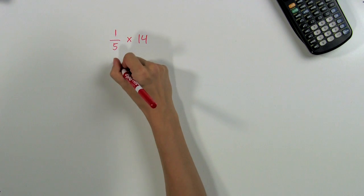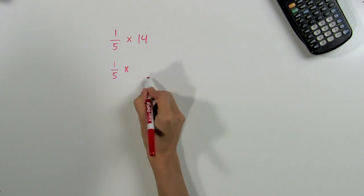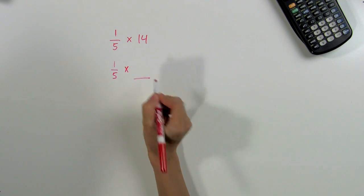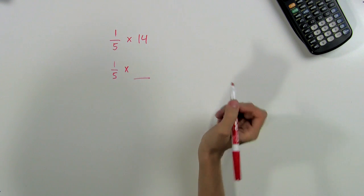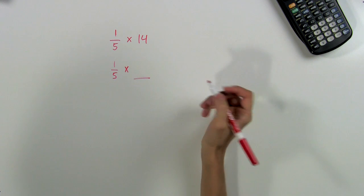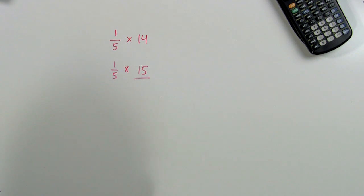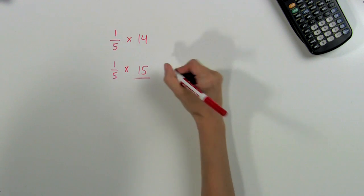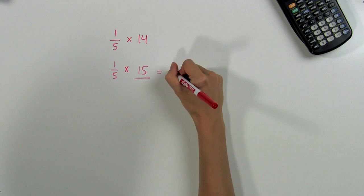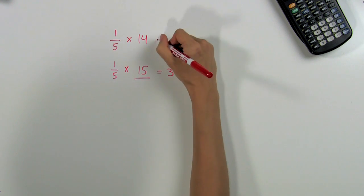Since our fraction is 1/5, we want a number here that is close to 14 but easily divisible by 5. The closest number is 15, so we go ahead and write it in. 1/5 times 15 is 3, and so that means that 1/5 times 14 is approximately 3.